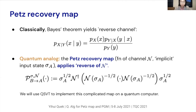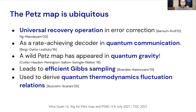The map looks complicated, but we will use the quantum singular value transform to implement it on a quantum computer. Before we go there, where does the PETS map appear? Because of its noise reversal properties, it appears as a universal recovery operation in error correction, as a rate-achieving decoder in quantum communication, in entanglement wedge reconstruction in quantum gravity, as part of an efficient Gibbs sampling algorithm by Brandao and Castellano, and it's also used to derive quantum thermodynamics fluctuation relations. So it's really quite ubiquitous.